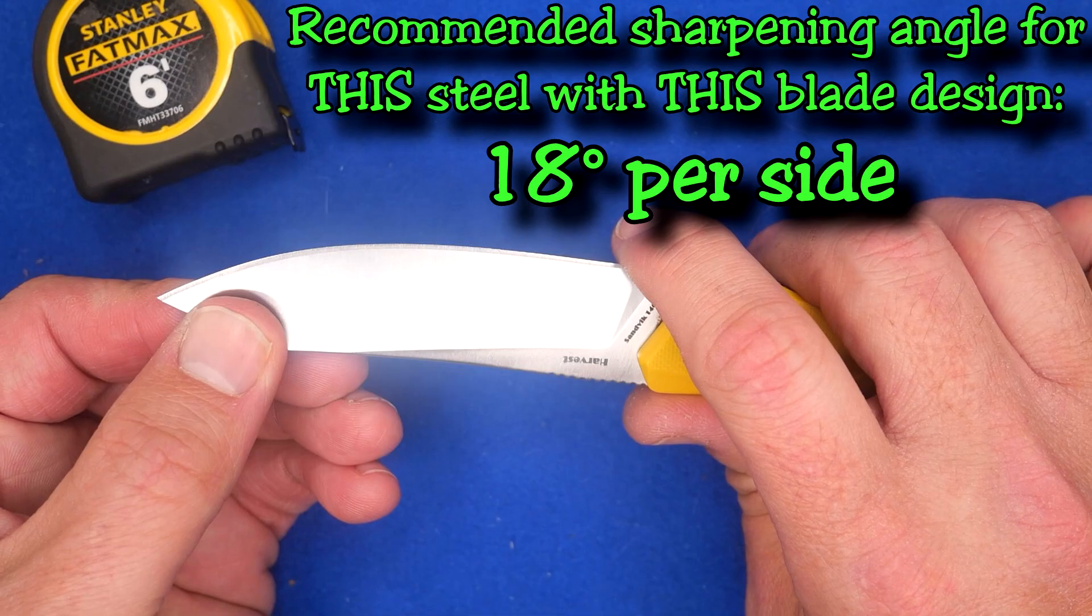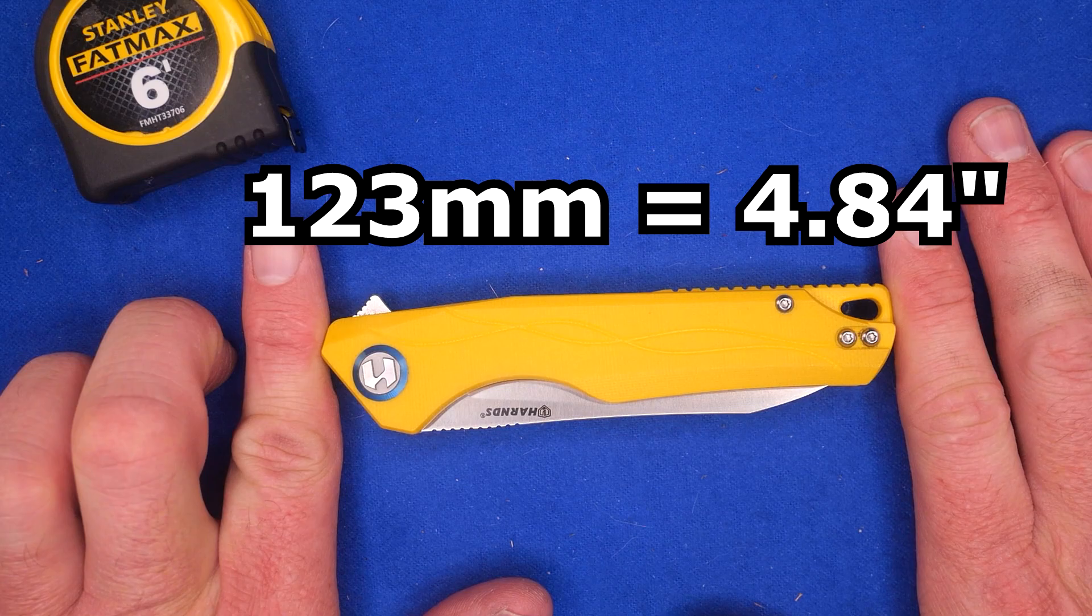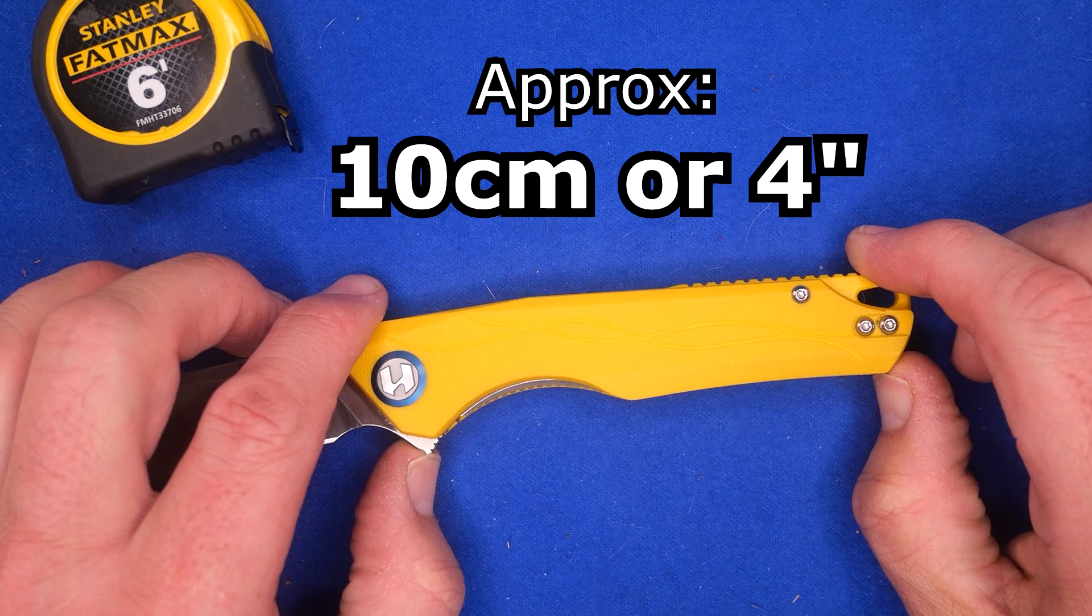The handle length is 123 millimeters, 4.84 inches. The grip area, it's about 10 centimeters, four inches. If you add in that forward choil, then it's about 12 centimeters, about four and three quarter inches.